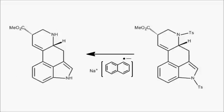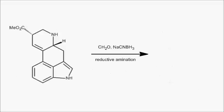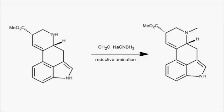The tosyl protecting groups were removed with sodium naphthalenide. Then a reductive amination with formaldehyde, which was reduced by sodium cyanoborohydride, methylated the appropriate nitrogen.